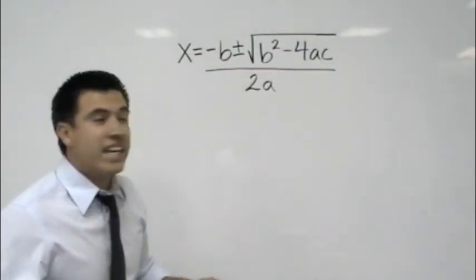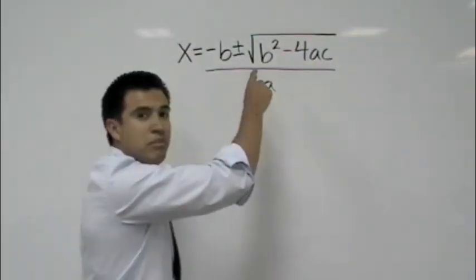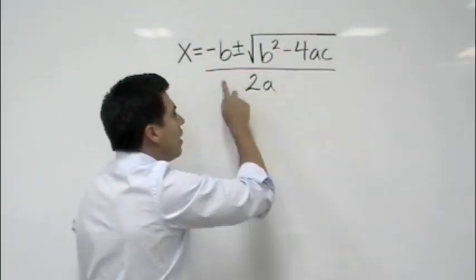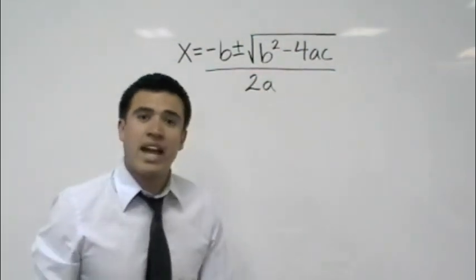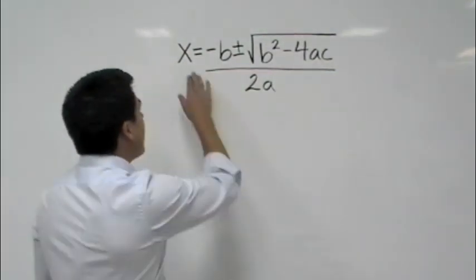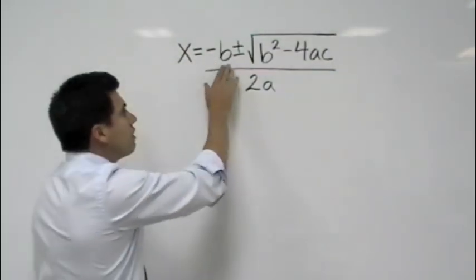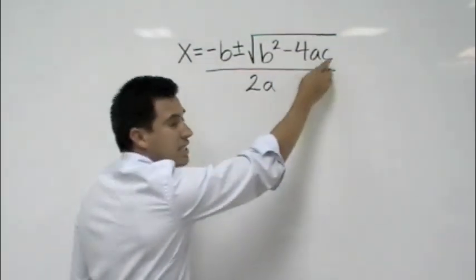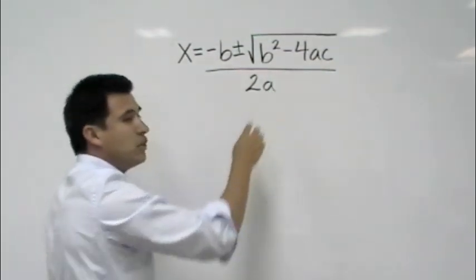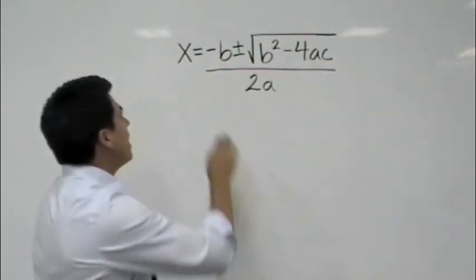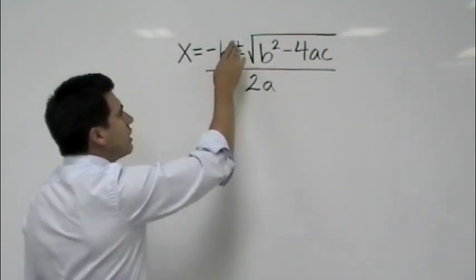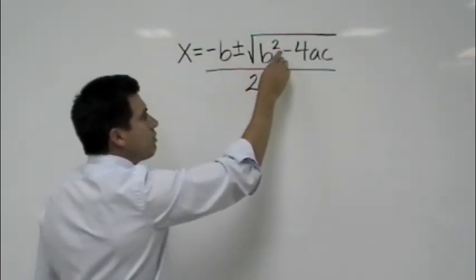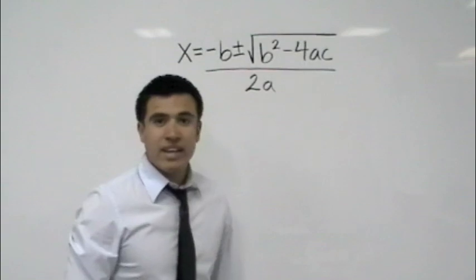Okay, here goes. x equals negative b plus or minus square root b squared minus 4ac all over 2a. Sing it with me! x equals negative b plus or minus square root b squared minus 4ac all over 2a. One more time! x equals negative b plus or minus square root b squared minus 4ac all over 2a.